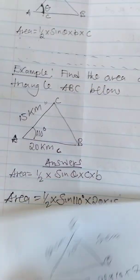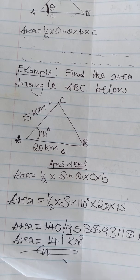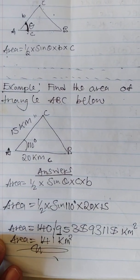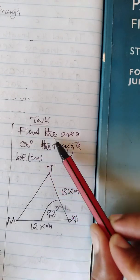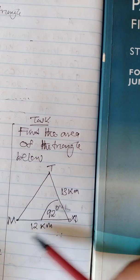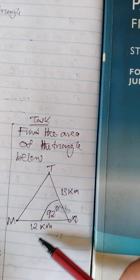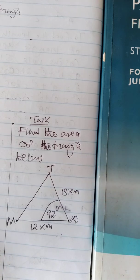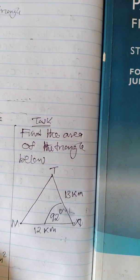That's how you get the area of a non-right-angled triangle. Now I'm going to give you an exercise which you can attempt. The question is: find the area of the triangle below. I've got this triangle MTN where the angle here is 92, this side is 12, and this side is 13. That's where we end for this presentation. Thank you so much.